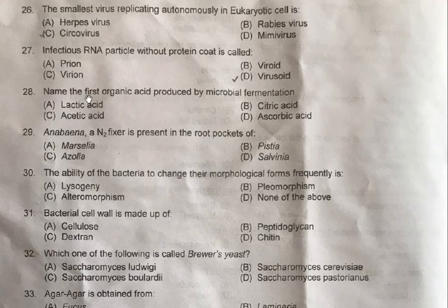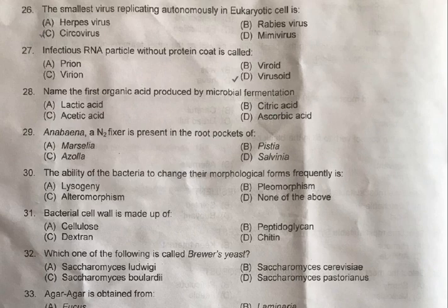Question number 28: Name the first organic acid produced by microbial fermentation — A: Lactic acid, B: Citric acid, C: Acetic acid, D: Ascorbic acid. The correct option is A, Lactic acid. Lactic acid is the first common product produced due to microbial fermentation. It was first produced in the USA from sugar fermentation in 1883.